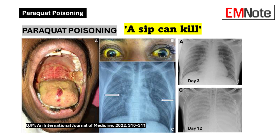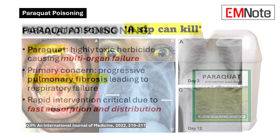Paraquat poisoning. Paraquat intoxication represents a critical medical emergency characterized by its potential for inducing severe multi-organ dysfunction, with particular predilection for pulmonary tissue.